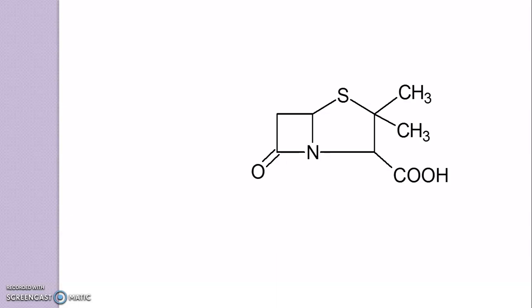Then, you have to introduce a 2-methyl group here. And, next to this, you have to attach a COOH group. So, this formed structure is of penicillinic acid.